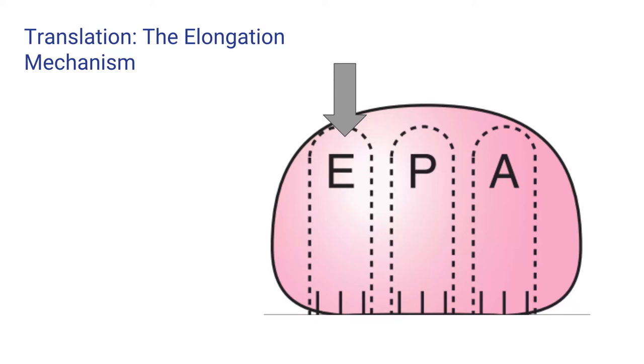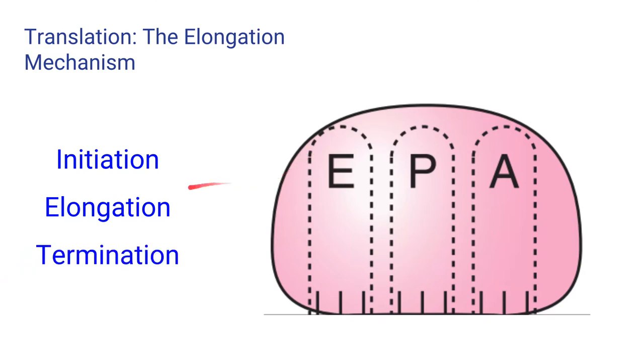Translation is comprised of three individual steps: initiation, elongation, and termination. In this video, we'll focus mainly on the elongation component of the mechanism.